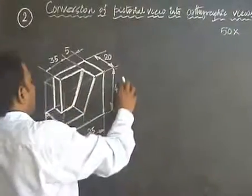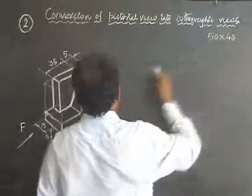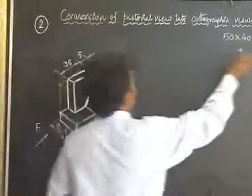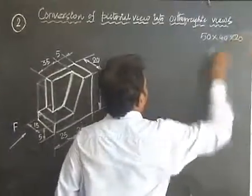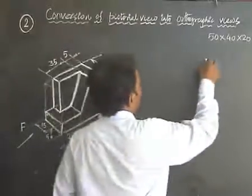Then the overall height, 40. Then the overall length, 20. Draw the first block, that is for the front view.